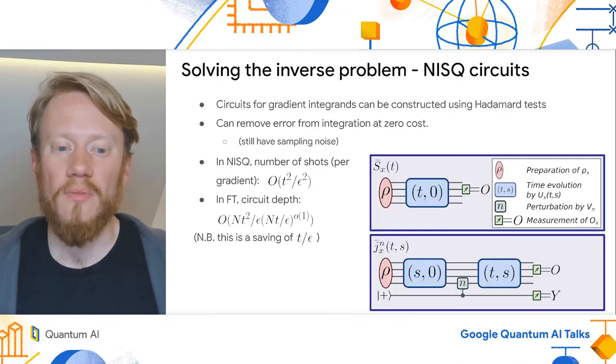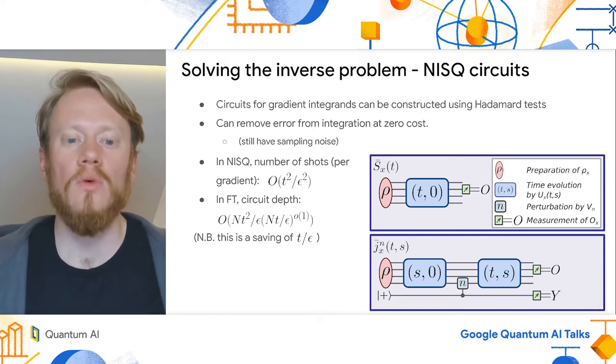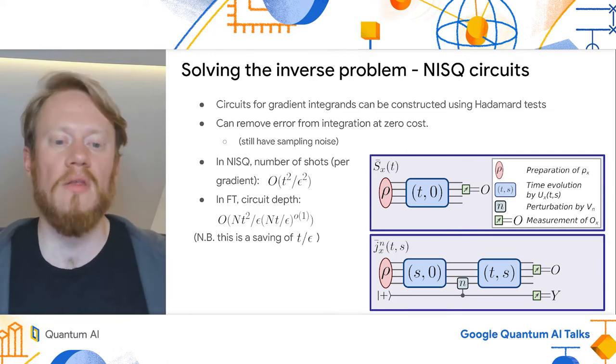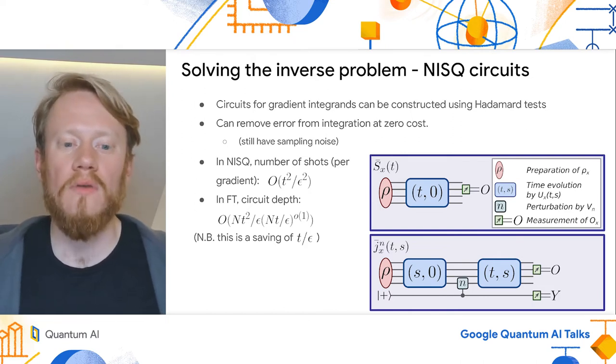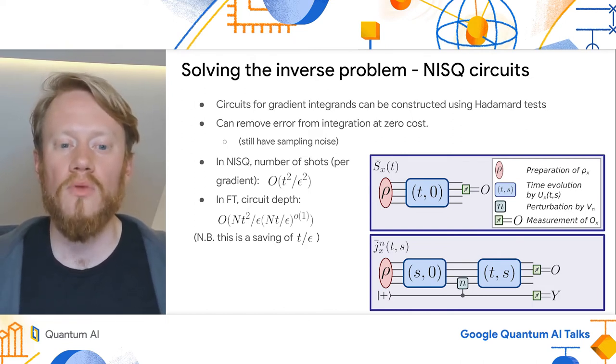The nice thing about the form of this previous equation was that we can write down a circuit which has an expectation value equal to the lower case j term on the previous slide. We achieve this using a generalized Hadamard test, which comes at the cost of using one extra qubit to perform this control rotation.